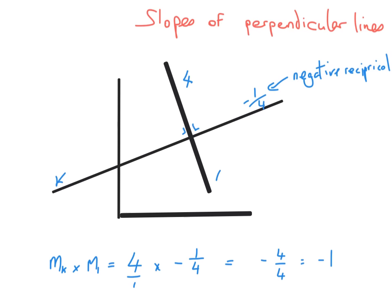There's also a relationship between the slopes of perpendicular lines. Perpendicular means there's a 90-degree angle between the two lines. If that's true, then the slope of one line will have a specific relationship to the slope of the other. If you multiply the two slopes together, you always get an answer of minus one.